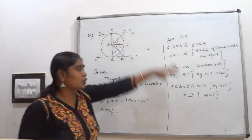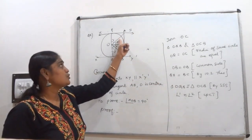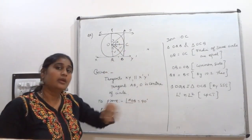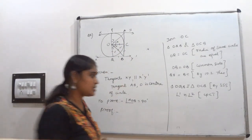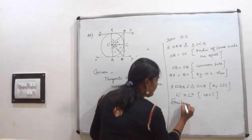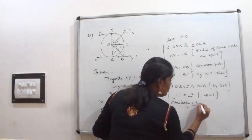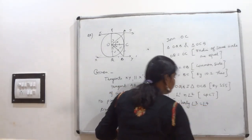So we know, no need of solving once again by taking these two triangles and showing congruency. Directly, similarly we can write. Similarly, angle 3 equal to angle 4.